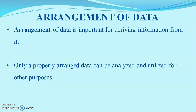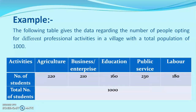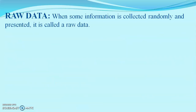Different ways of arrangement of data are essential for deriving information from it. Only a properly arranged data can give an inference. For example, imagine there are a thousand people in a village — we get no idea how many do agriculture or business. But if given a properly arranged dataset, we can see that 220 people do agriculture, 210 do business, 160 do education, and so on. That is the importance of arrangement of data.